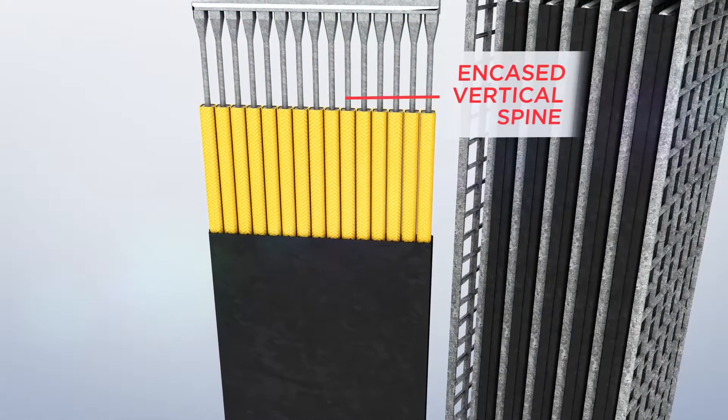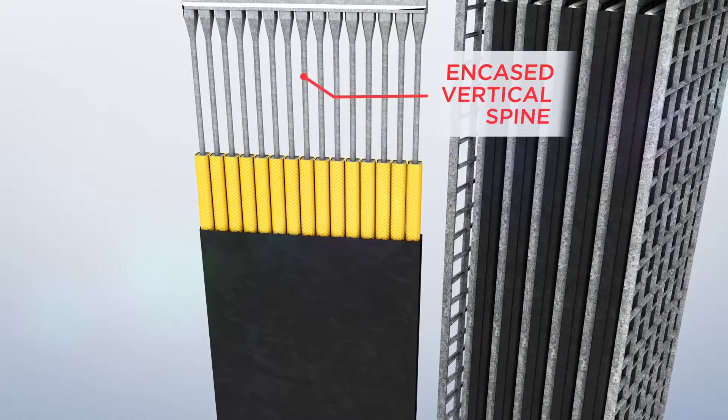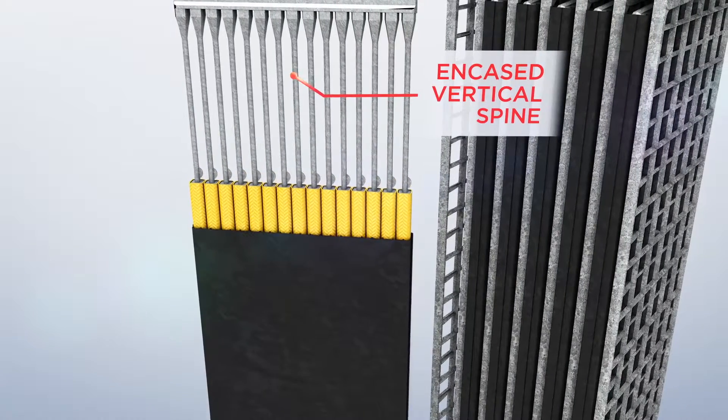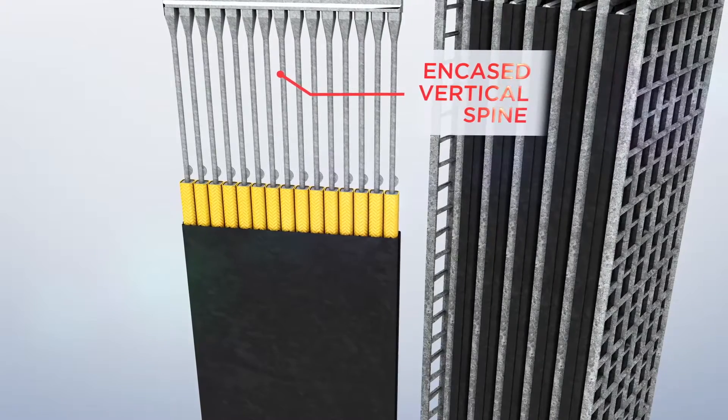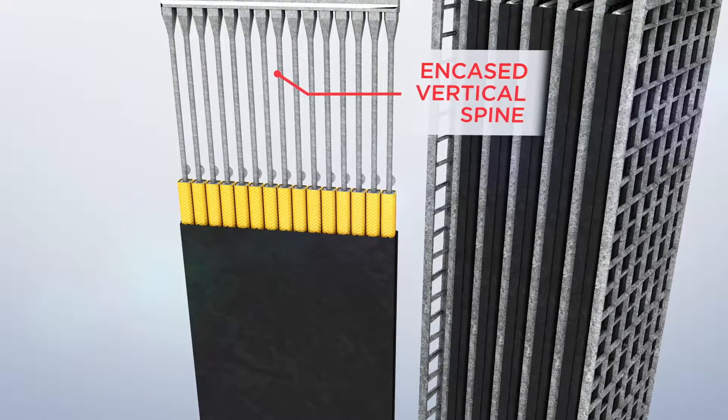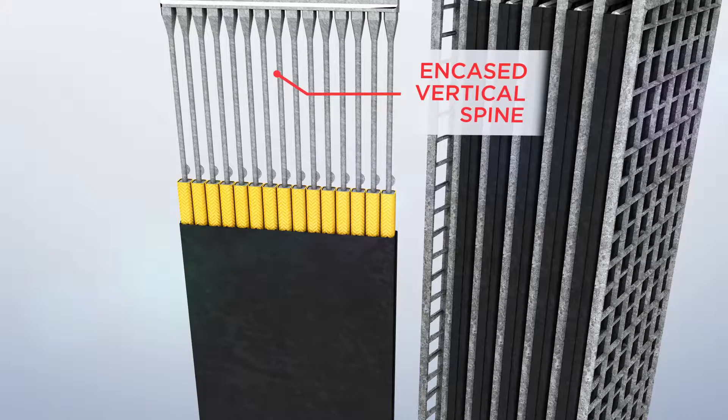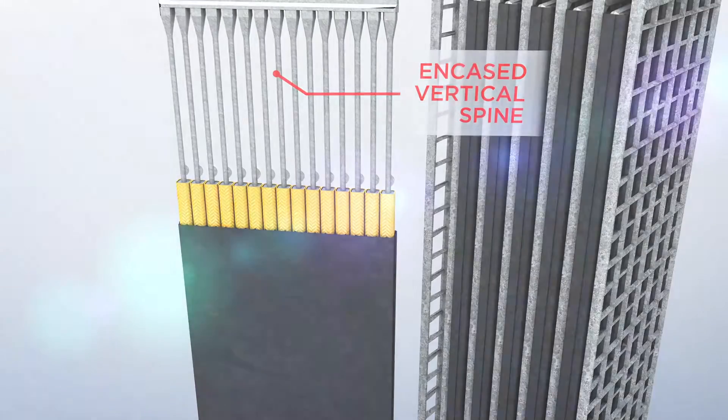The lead spines not only provide the path for electrons to flow to the positive terminal, they also provide structural support for the square tubes. By encasing the spines within the active material, they are not directly exposed to electrolyte, which prevents corrosion and increases service life.